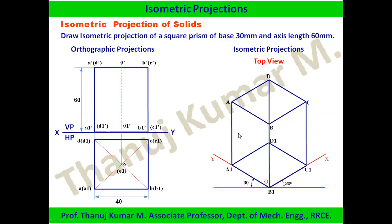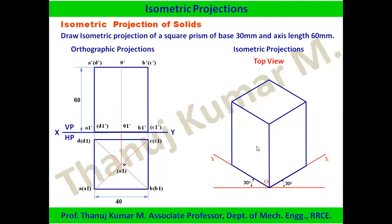Annotations are shown only for reference; they are not required in isometric projections. Hidden lines are also not required. Construction lines may be retained or removed as preferred. The annotations drawn are only for your reference and can be removed afterward.